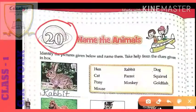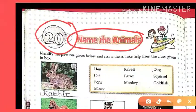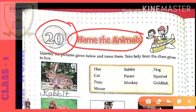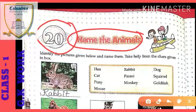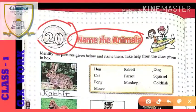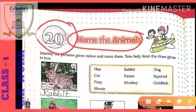Today's chapter is chapter 20 and the chapter name is 'Name the Animals.' In today's chapter, we have to write down the animal names below their pictures. We will do an exercise where some animal pictures are already given in boxes — you will identify them and write down the correct name of each animal.